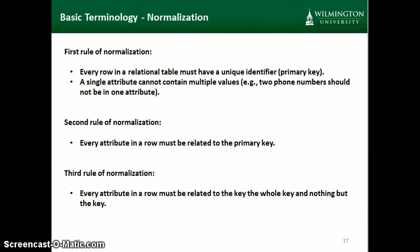The way to remember this is it's similar to the phrase you've heard many times: the truth, the whole truth, and nothing but the truth. What we mean is sometimes we might have more than one attribute needed to be the primary key. If that's the case, we want to make sure all the other attributes in that row are related to the whole key — both attributes that are part of the primary key — and aren't related to anything other than the primary key. If we find we've violated the third rule of normalization, we probably haven't structured our tables properly and will want to reorganize our attributes into different tables.